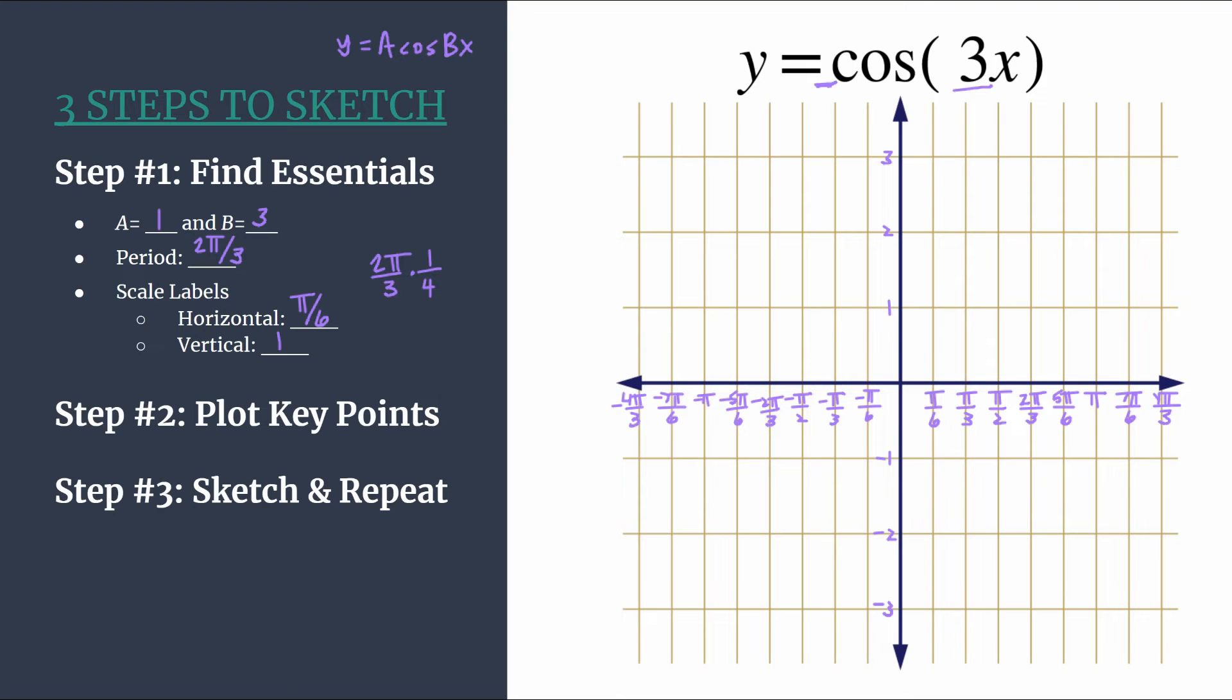Our maximum happens on the y-axis and the y value is determined by a. So we see a is 1, we know our maximum will happen at (0, 1).